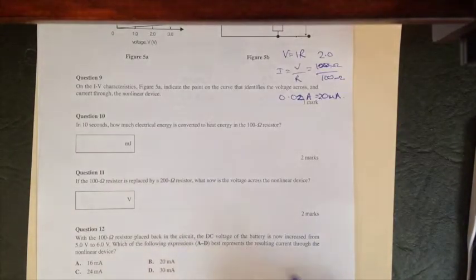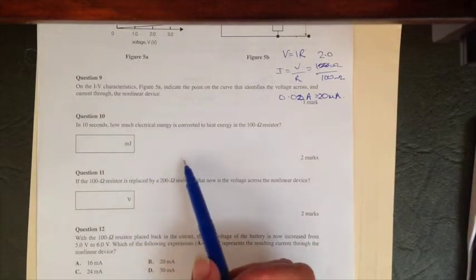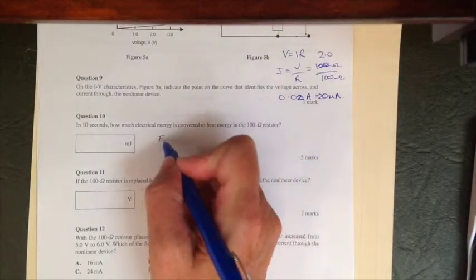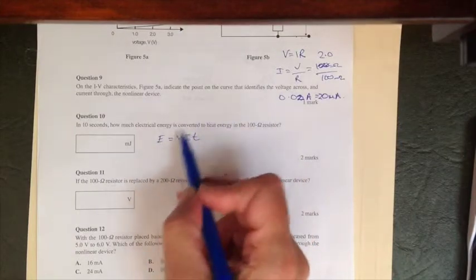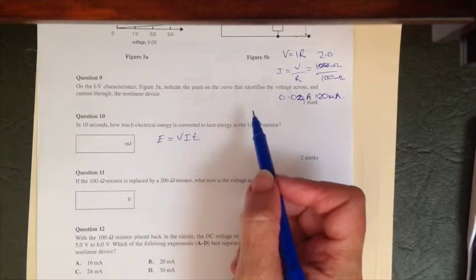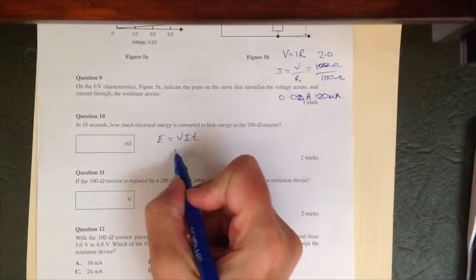Okay, the next question asks us to calculate how much electrical energy is being converted, so we're going to use our rule for energy, which is equal to VIT. And remember, this comes directly from our definition of power, and this is really just plug it in and grab the answer.